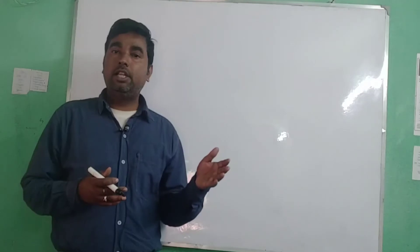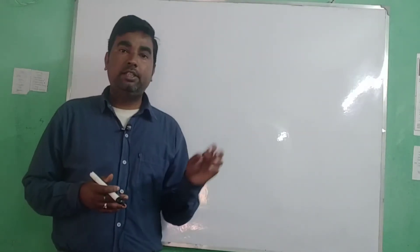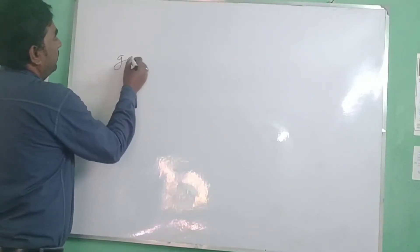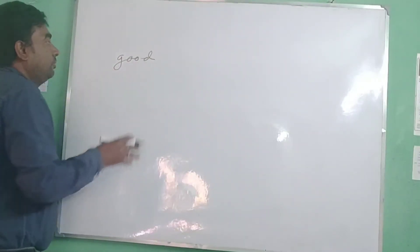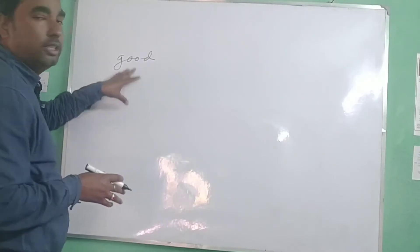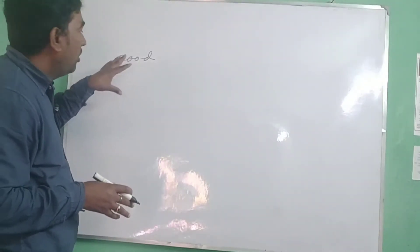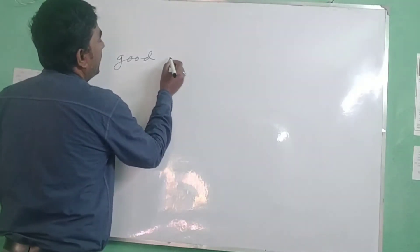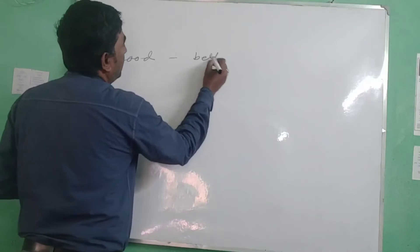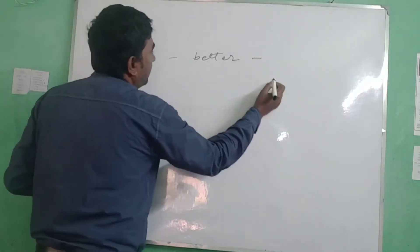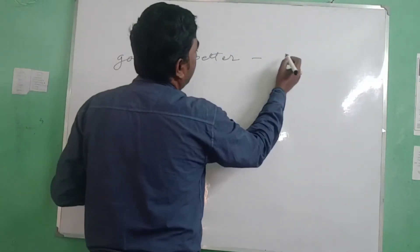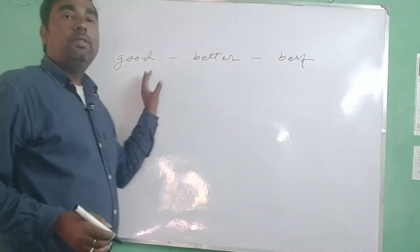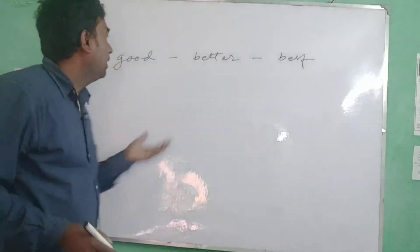All of these words are transformed into comparative degree as well as superlative degree. For example, I am now going to write the word 'good.' Good is called positive degree. When you transform it into comparative, it would be 'better.' The third form, superlative degree, is 'best.'